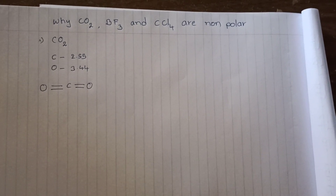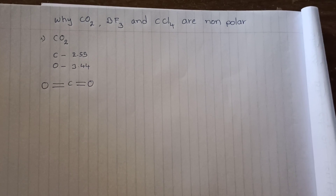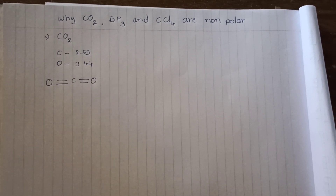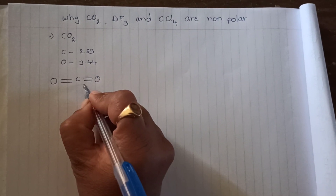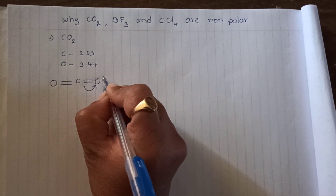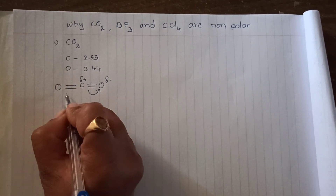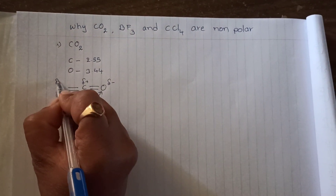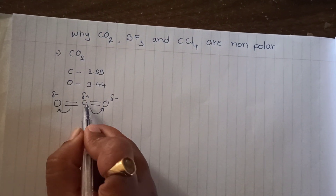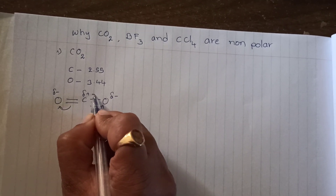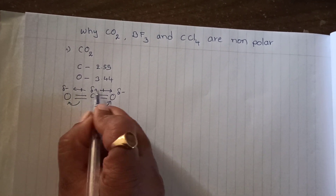Whenever molecules have a symmetrical geometry, their dipole moments will generally be cancelled and the net dipole moment of the molecule will be zero. Carbon is less electronegative than oxygen, so the bonded pair is pulled towards oxygen — oxygen gets a partial negative charge and carbon gets a partial positive charge. Similarly, the other oxygen also pulls the bonded pair of electrons towards itself, getting a partial negative charge, with carbon getting a partial positive charge. So the dipole moment acts in this direction and in this direction — these two are in opposite directions.